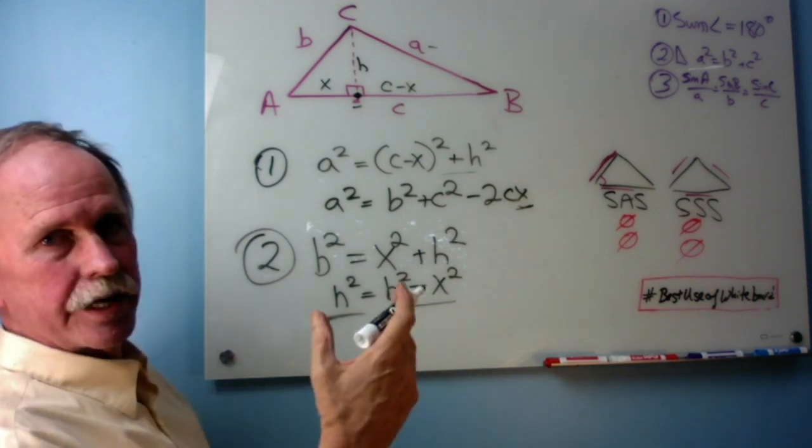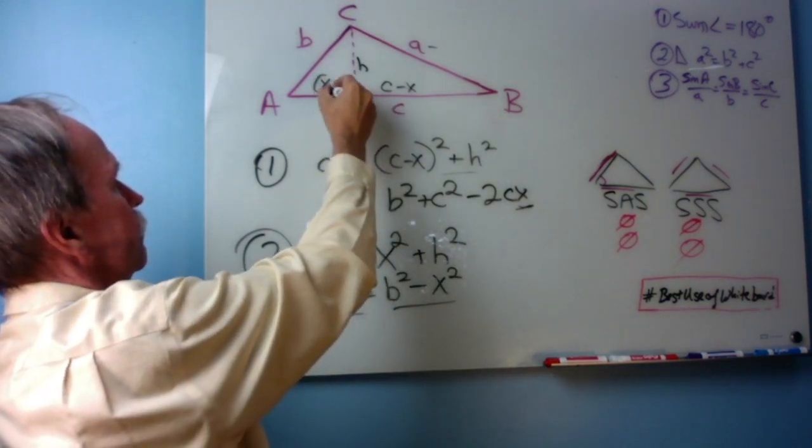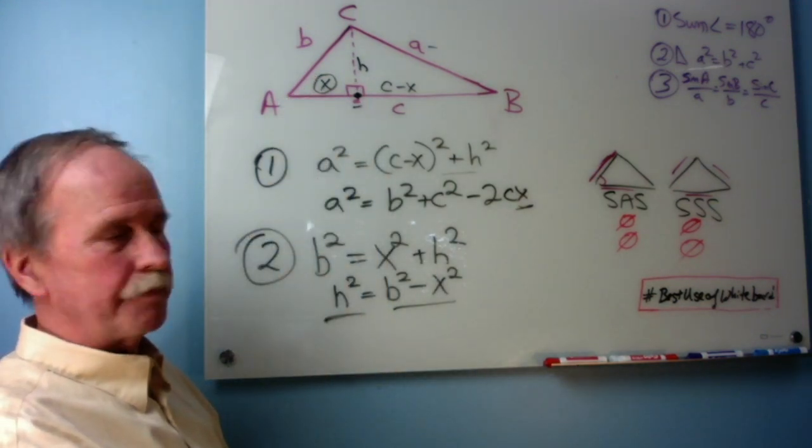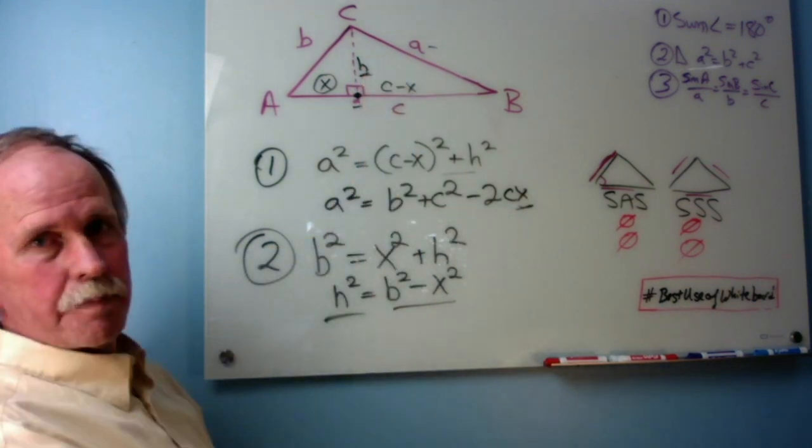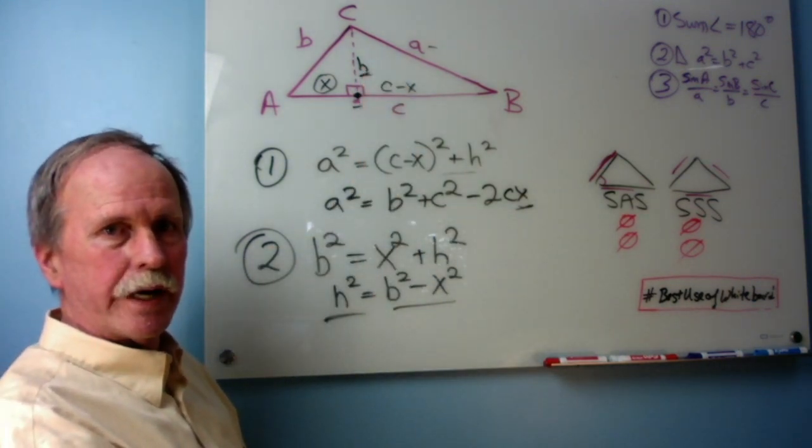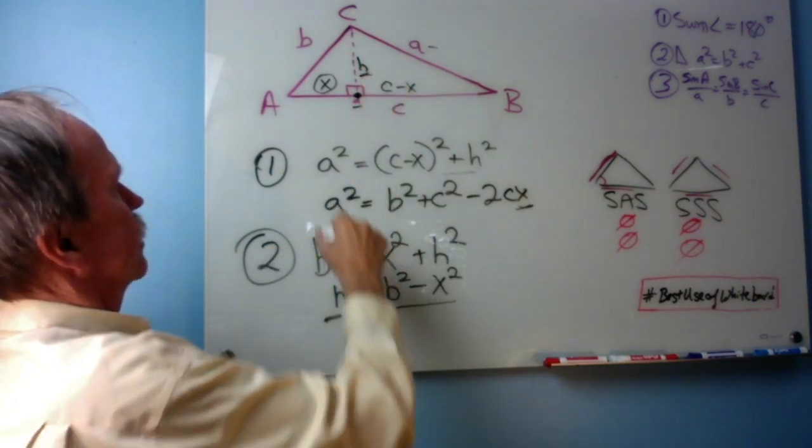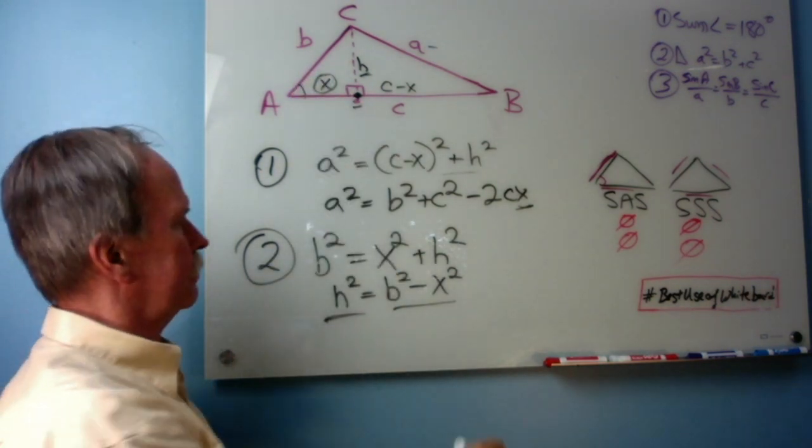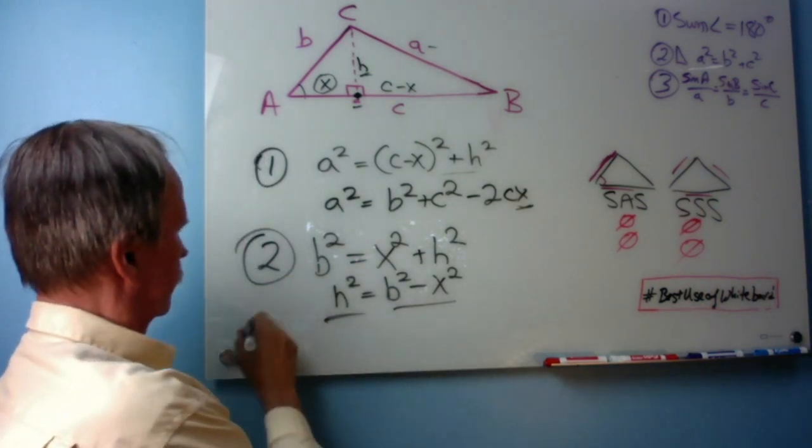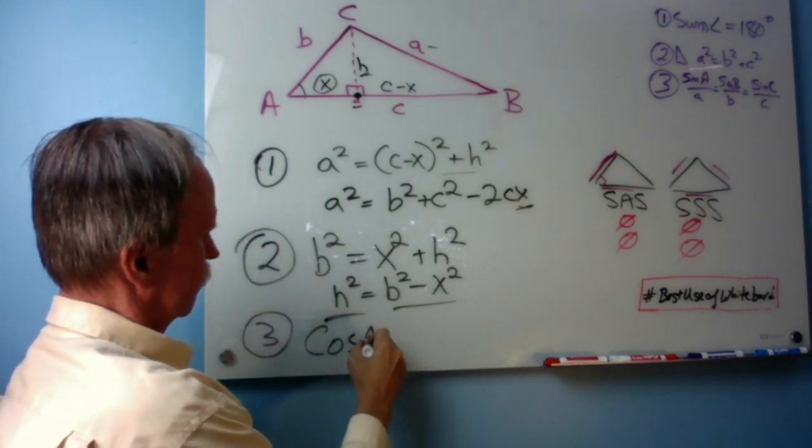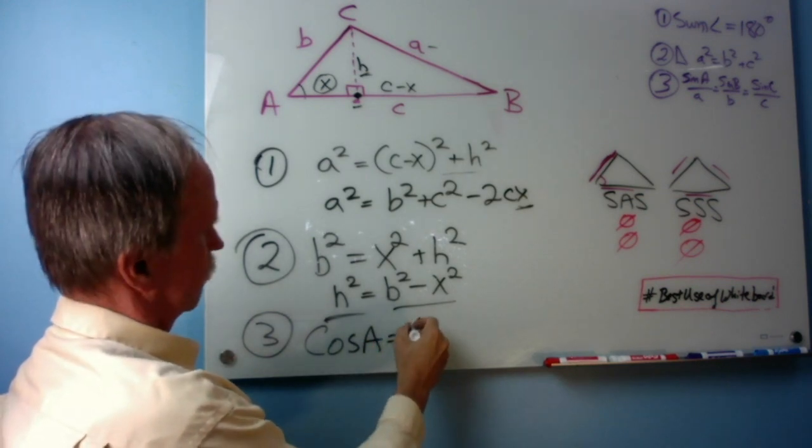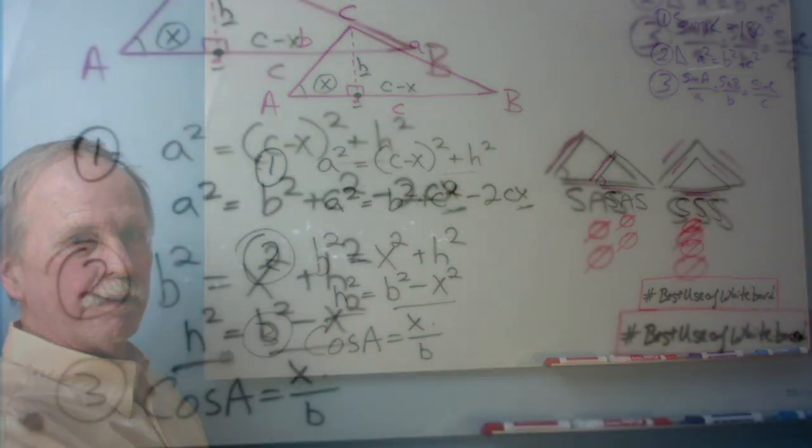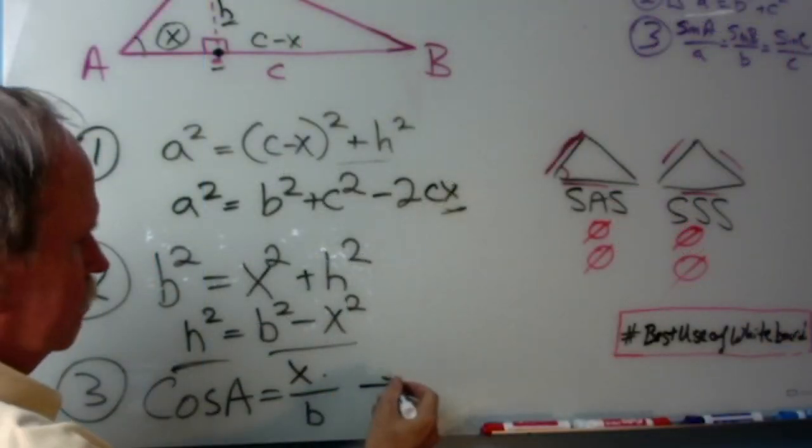Well, where is the X in this diagram? It's right here. So, chances are it's going to be something to do with that triangle up there. There's also an H on that triangle. I probably don't want to use that, do I? But here's something interesting. Here's an angle A. What's the cosine of angle A? There's my X. Can I solve for that? Sure I can.